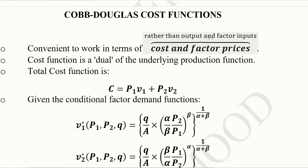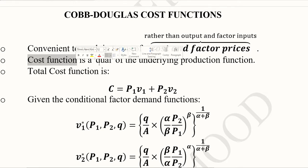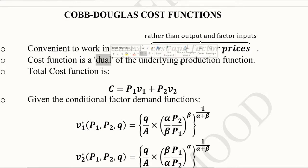Output and factor inputs are physical units, whereas cost and factor prices are in monetary units. So when the information is in this form, we should have a cost function to understand the situation. They are another way of representing a similar sort of situation. Therefore, these cost functions are actually a kind of dual of the underlying production process — they are similar but connected. In duality theory, we understand how a production function is linked with a certain cost function.